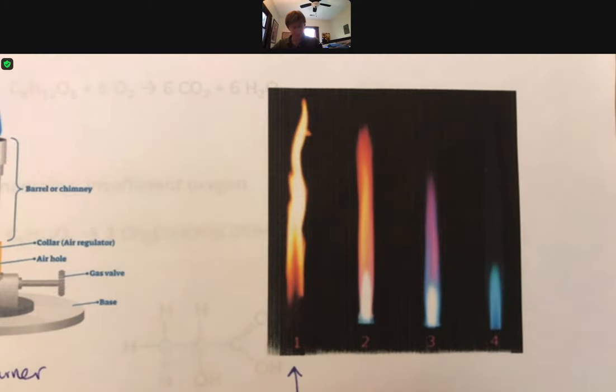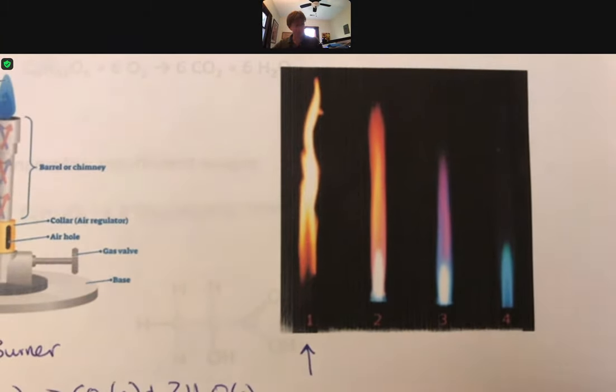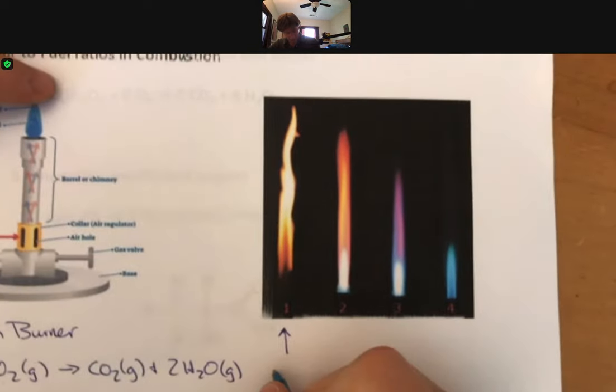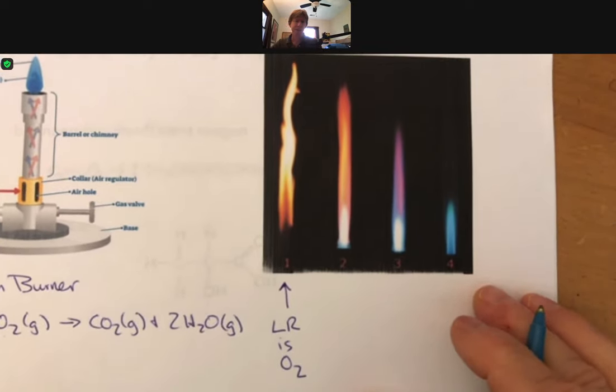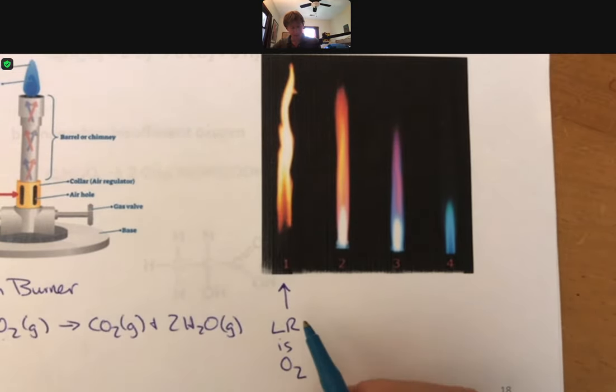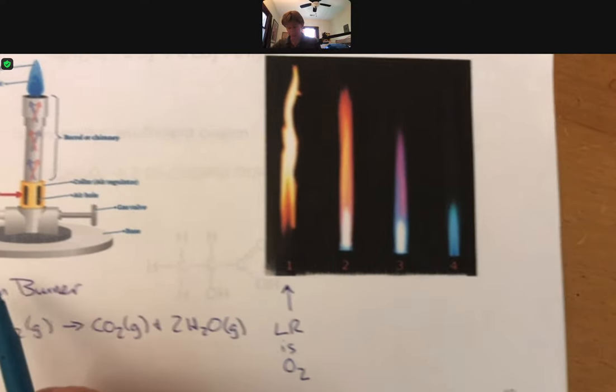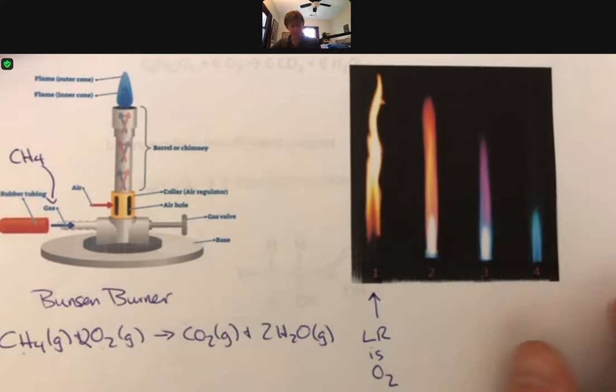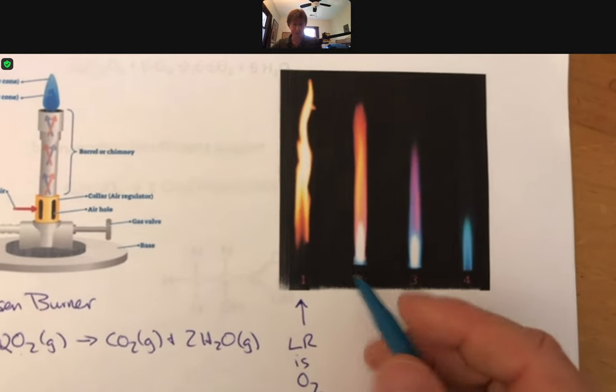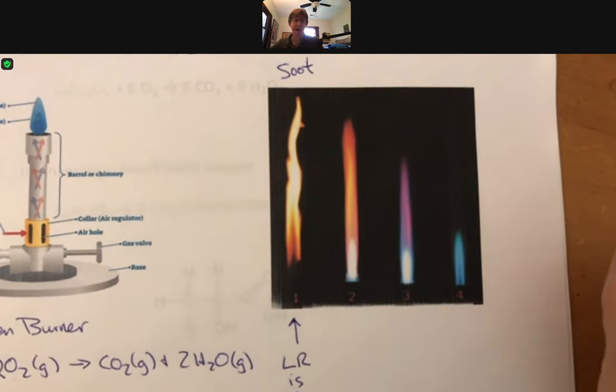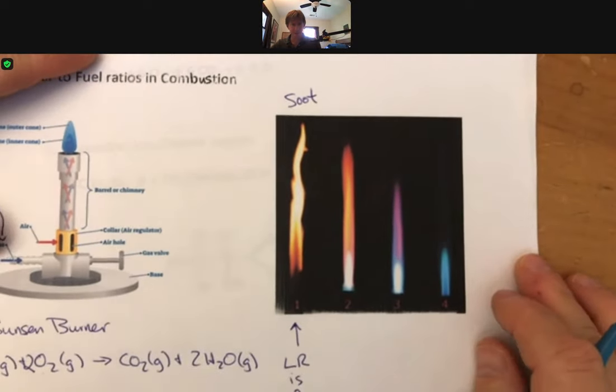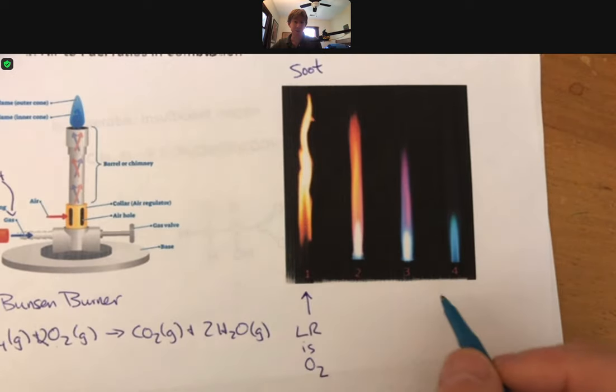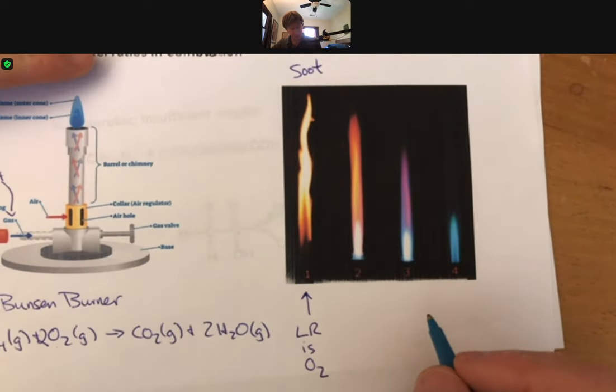In this first one, the limiting reactant is oxygen. If the limiting reactant is oxygen, that means you're going to have some leftover CH4, and that often comes off of a flame like this as soot or black carbony type stuff. You also notice that this color of flame looks like what most parts of a campfire look like as well, and that's because oxygen is limiting and you've got ash coming off of it.